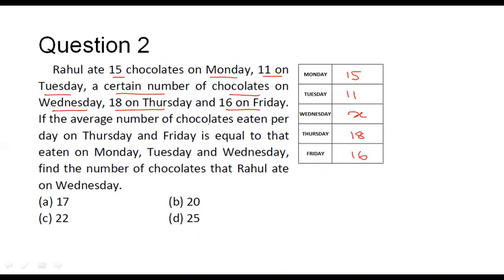It is given that the average number of chocolates eaten per day on Thursday and Friday is equal to the average eaten on Monday, Tuesday, and Wednesday. You are asked to find the number of chocolates Rahul ate on Wednesday, that is, the value of X.